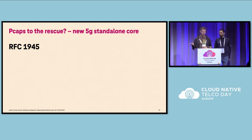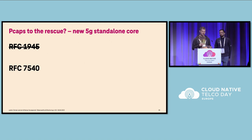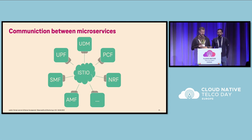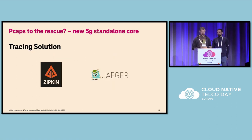RFC 1945 is HTTP 1.0, from 1996. And 5G standalone of course uses RFC 7540, which is HTTP 2.0 from 2015. So we decided to put something in the middle to abstract communication between those network functions. We chose Istio for the time being, and the gray boxes here show the sidecars, which allow us to abstract certain things like security, and also with these sidecars we have the possibility to use tracing solutions like Zipkin or Jaeger.